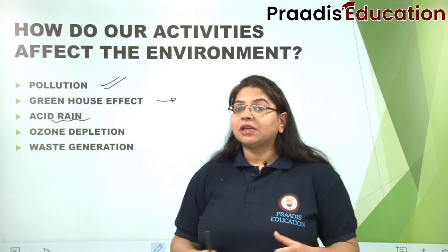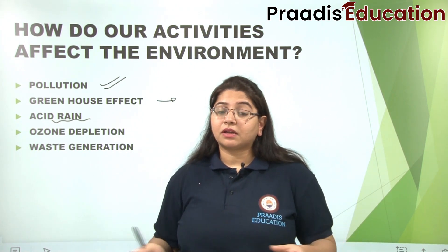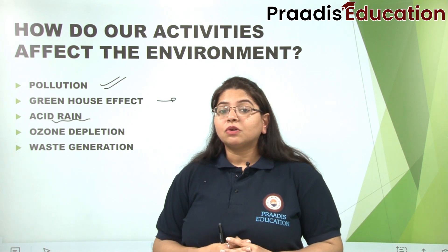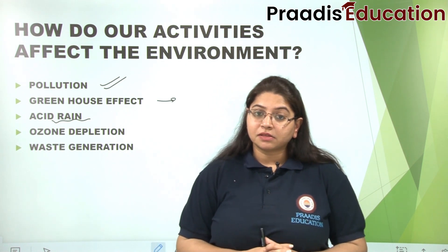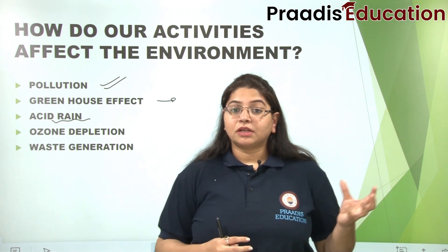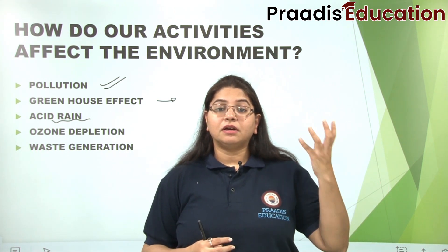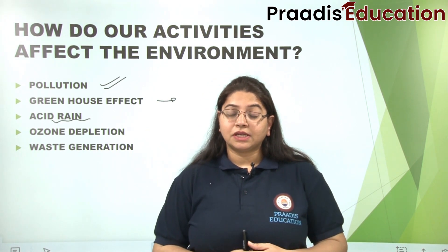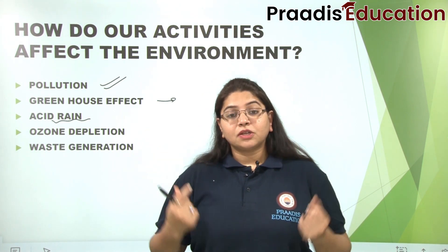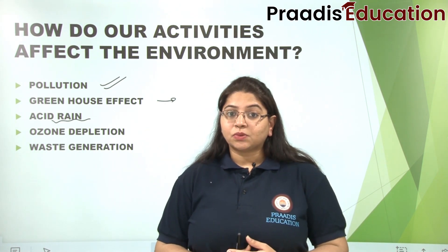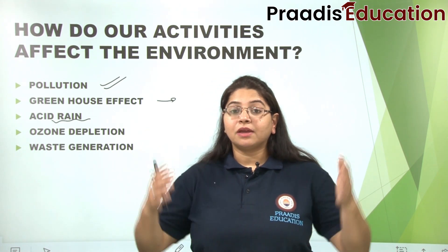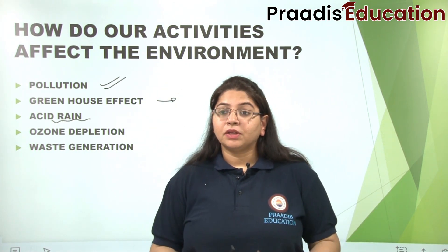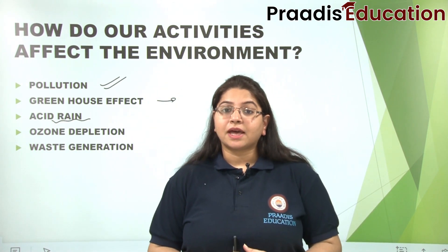What happens in acid rain? When we burn chemicals, there are some unburned particles — such as CO2 is released, nitrogen oxide is released. These oxides are released. When they fall into the water, we call it acid rain.